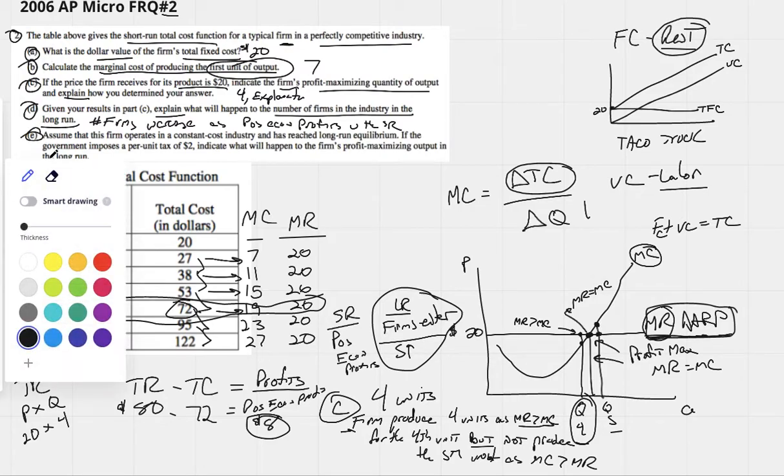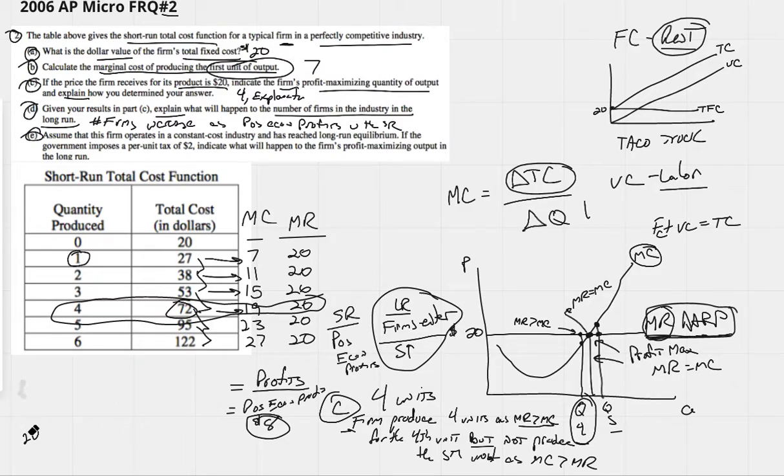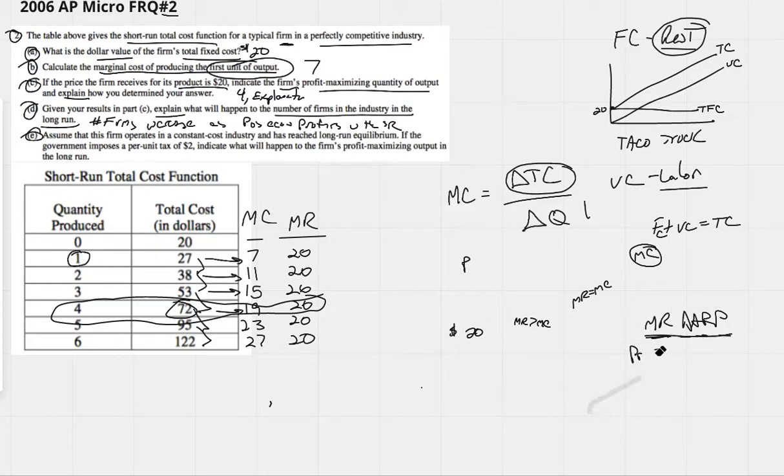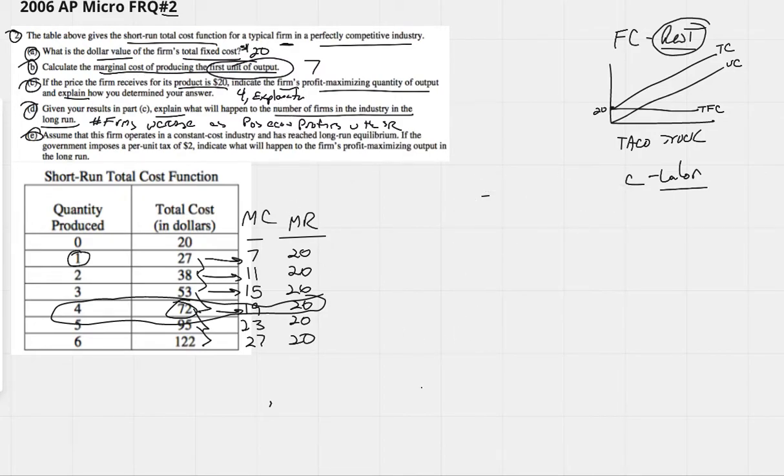All right, Part E, and for E, I think I'm going to have to, I want to get rid of this so that we can draw a little graph here. And I know my graph is not going to be perfect, but I'm going to do the best I can to sort of explain this because this is a little bit more in-depth and hard to understand if you don't have a graph, I think. Or maybe it's easier to understand, but it's hard to draw the graph and make sense of it. So let's see if I can do it. It says, assume this firm operates in a constant cost industry and it has reached long-run equilibrium. If the government imposes a per-unit tax of $2, indicate what will happen to the firm's profit-maximizing output in the long run. So let's draw it. Let's say we have our market and we have our firm.